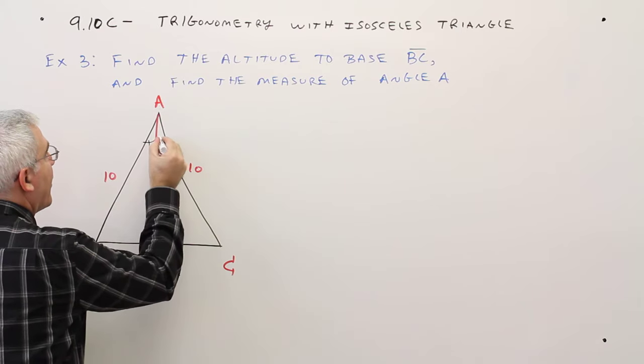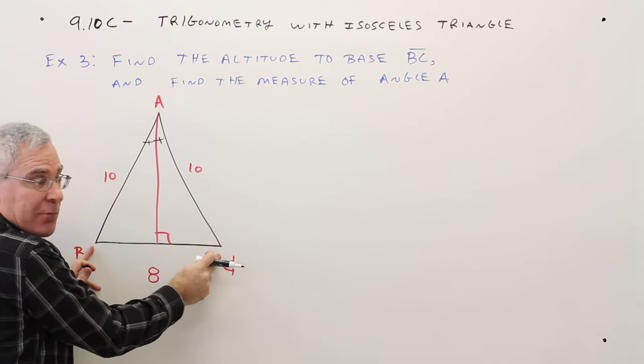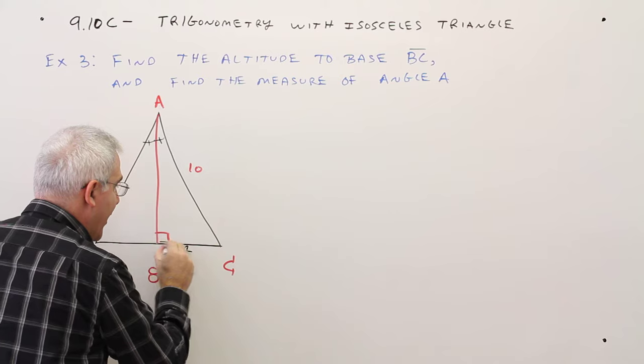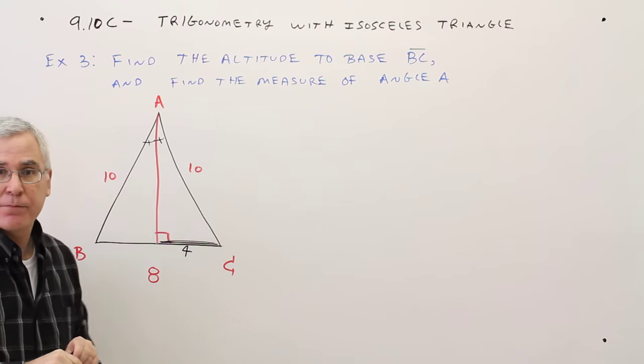So these two angles are congruent, and if this big side was 8, then this side over here is 4.